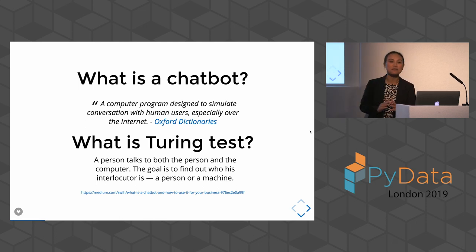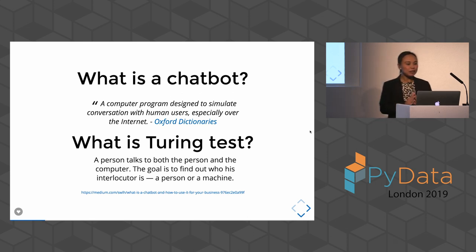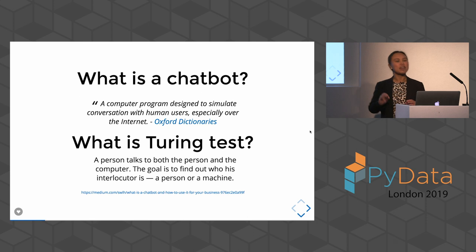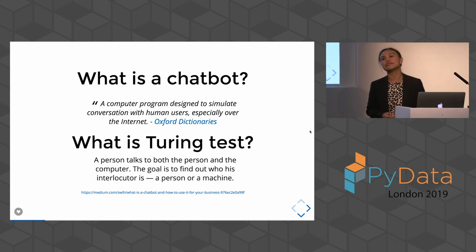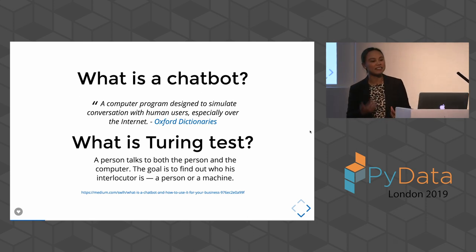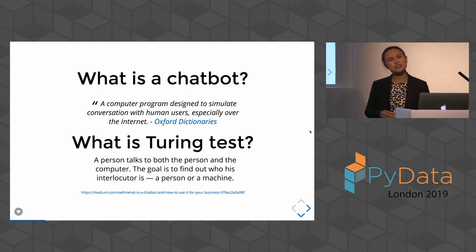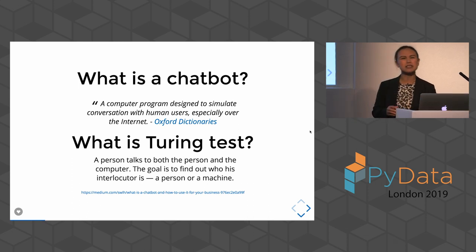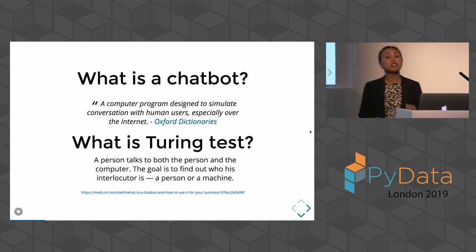There's a really good Medium post that talks about this. A chatbot, by the Oxford Dictionary, is a computer program designed to simulate conversation with human users — basically a bot that could chat to you. People are also talking about the Turing test. I heard about it when I was in primary school, secondary school — it's been around a long time. It actually started in 1950.